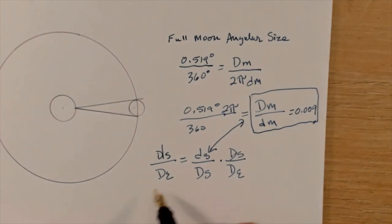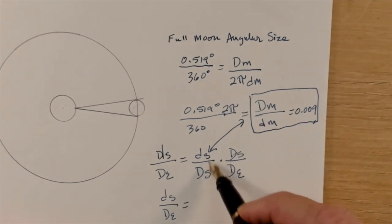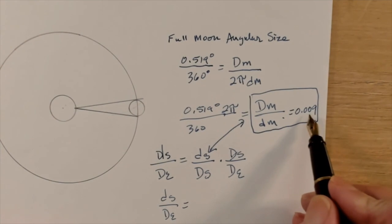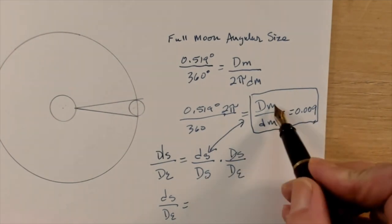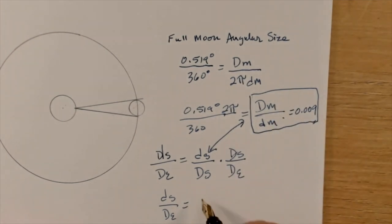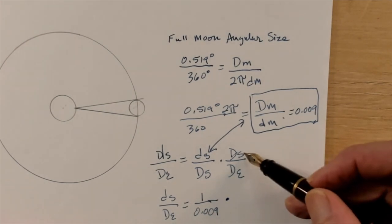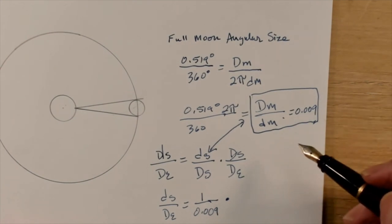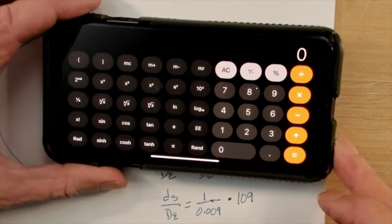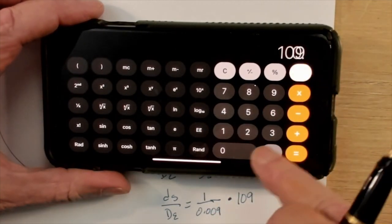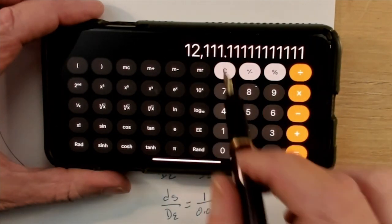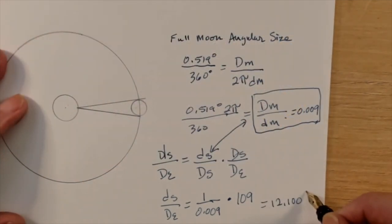So the distance to the sun over the diameter of the earth would be the same as the distance to the moon over the diameter of the moon. And as we see right here, that ratio is 0.009. However, we have the diameter on the bottom here and it's on the top here, so we have to invert this. So that's going to equal 1 over 0.009 times the diameter of the sun compared to the diameter of earth. We already have that as well, that equals 109. So what we end up with here is 109 divided by 0.009 equals 12,100. And that's the distance to the sun over the diameter of earth.